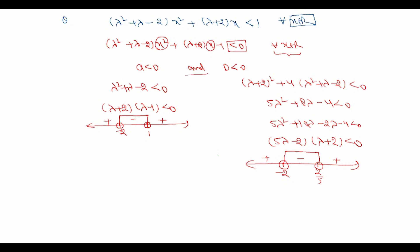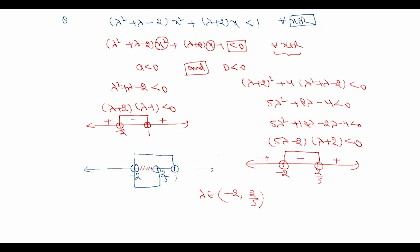Since both conditions must hold simultaneously, we take their intersection on a number line. The first condition gives λ ∈ (-2, 1) and the second gives λ ∈ (-2, 2/5). The intersection is λ ∈ (-2, 2/5), with both endpoints excluded. So the final answer is λ belongs to (-2, 2/5).